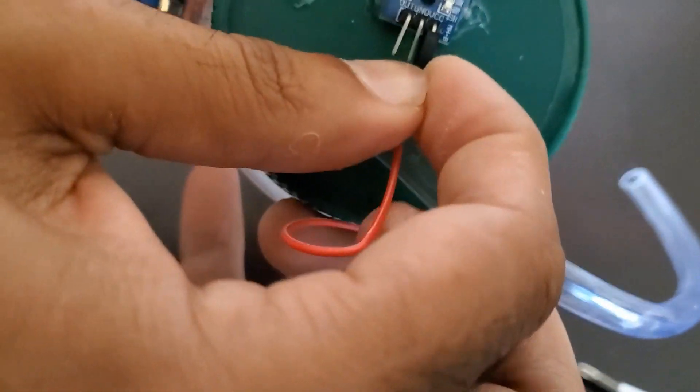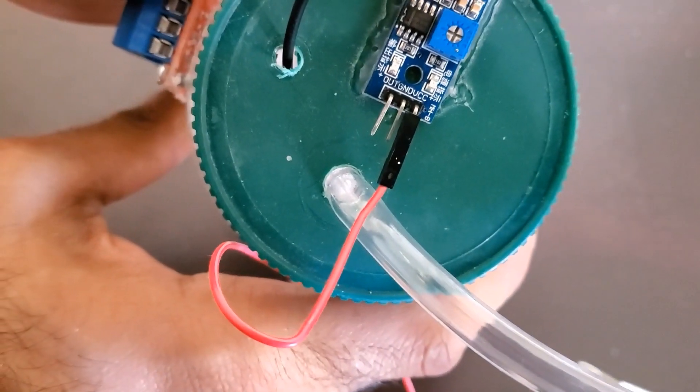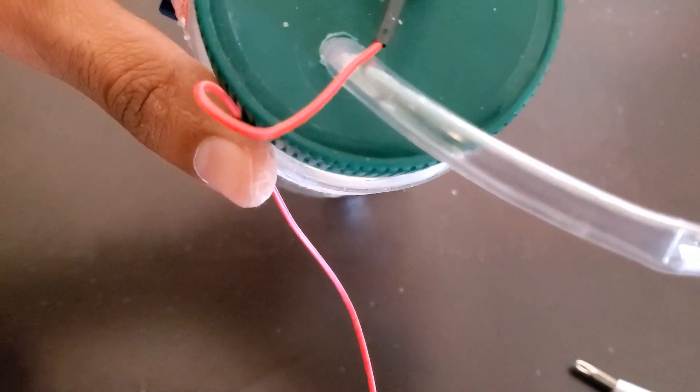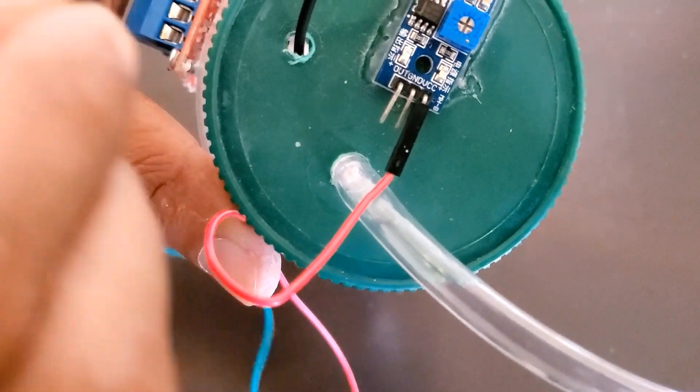We start off by wiring the sensor. I wired a red wire to the VCC, a green wire to the output, and a black wire to the ground.